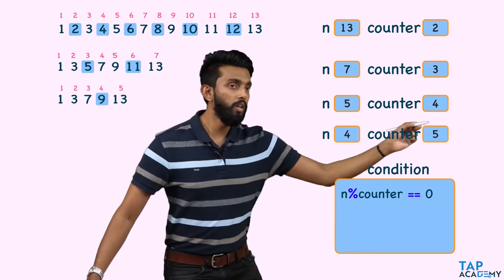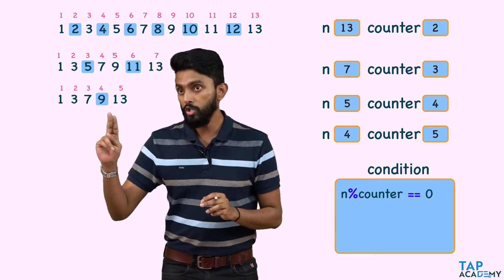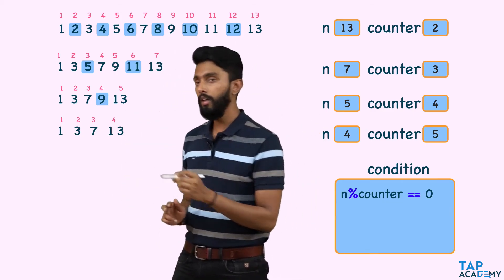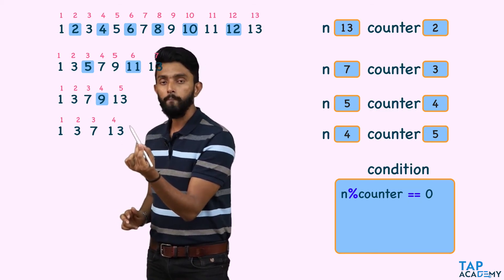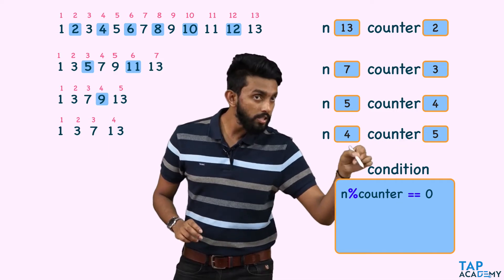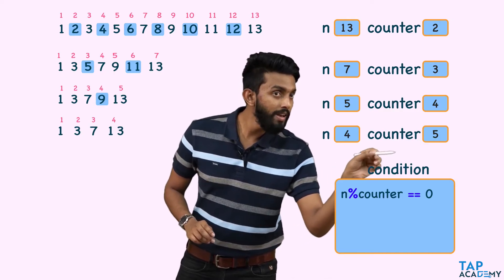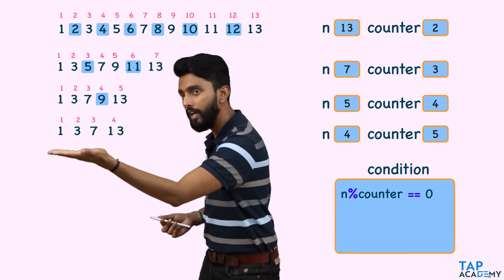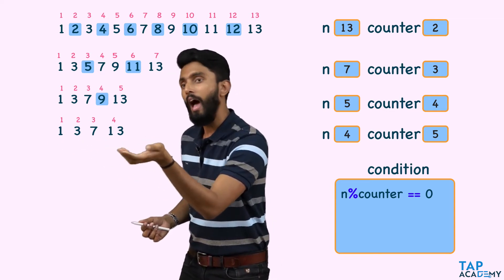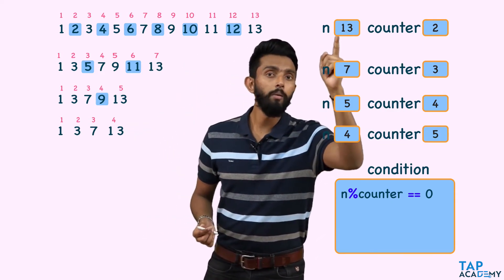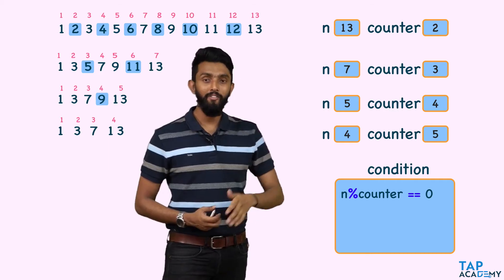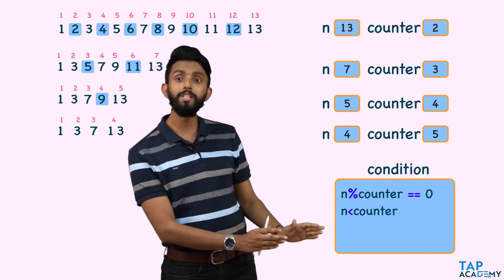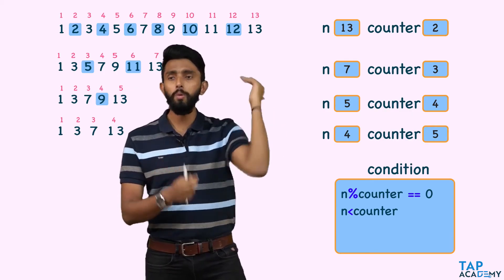Counter increments to 5. Updated positions are 1, 2, 3, 4. Every fifth position element is unlucky — but is there an element at position 5? No. Counter has surpassed the n value. The moment n becomes less than counter, you can guarantee all remaining numbers are lucky, and hence the given number is also a lucky number.